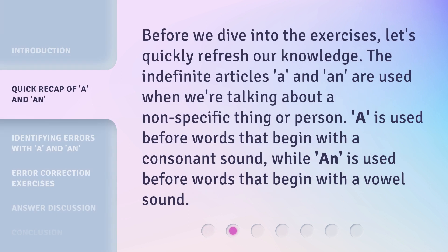Before we dive into the exercises, let's quickly refresh our knowledge. The indefinite articles, A and AN, are used when we're talking about a non-specific thing or person. A is used before words that begin with a consonant sound, while AN is used before words that begin with a vowel sound.